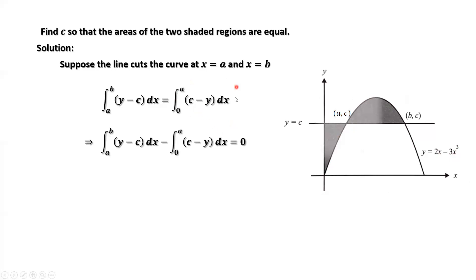We move the right-hand side to the left-hand side. The sign becomes negative. We switch the order of c minus y to y minus c. Negative, negative becomes positive.